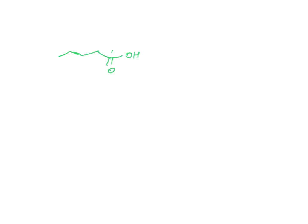So let me write that down. If you have a carboxylic acid — 1, 2, 3, 4, and 5 carbons — and you treat that with bromine and PBr3, and then put in water to wash away, you are going to end up with bromine at the alpha position.